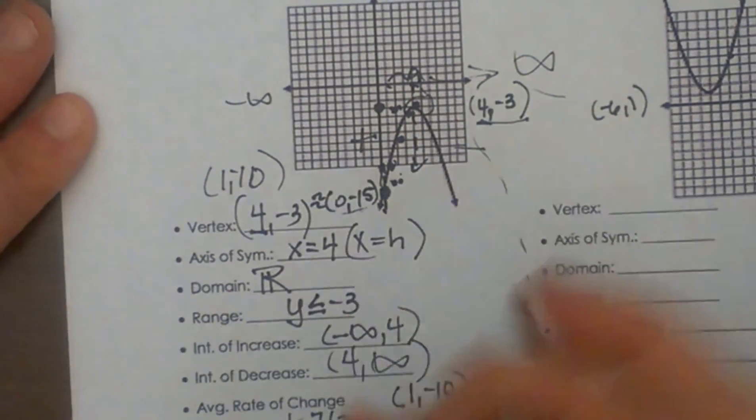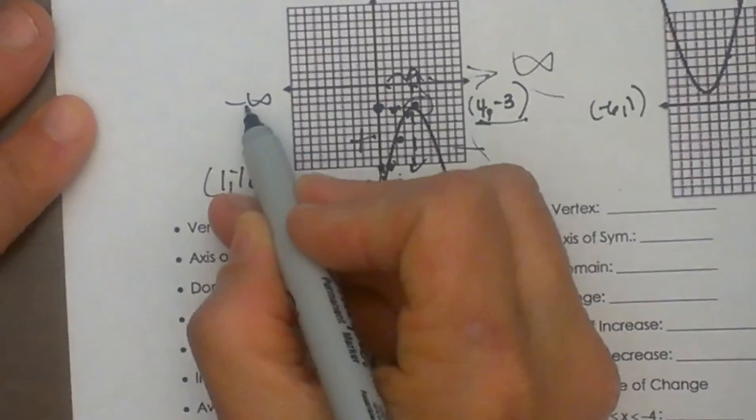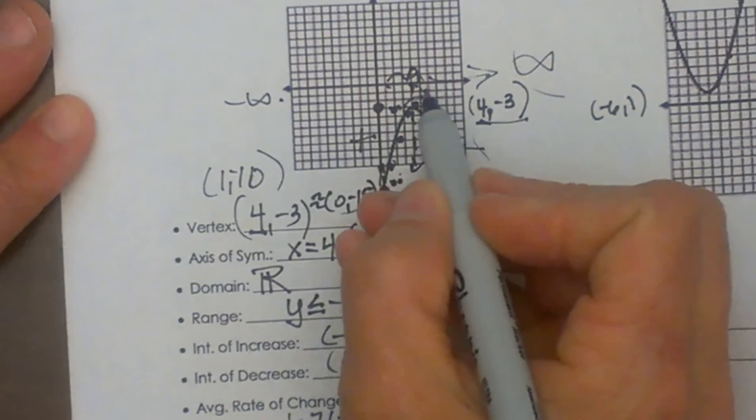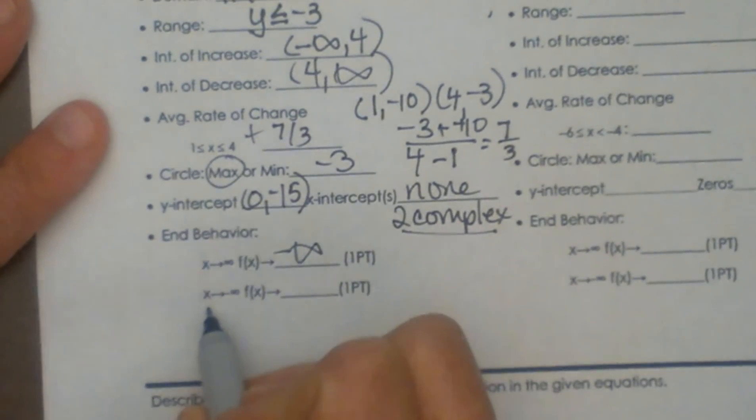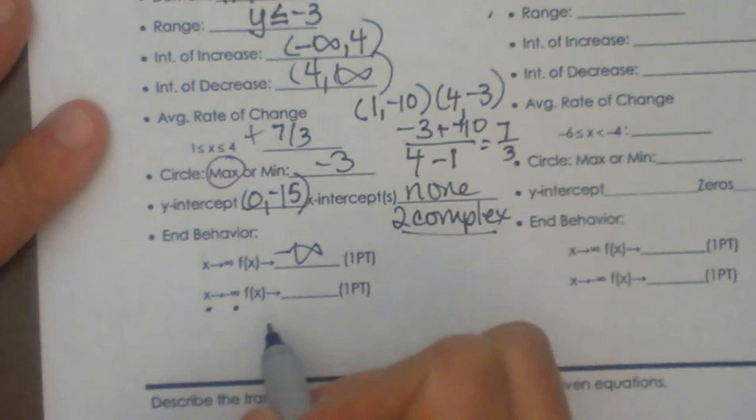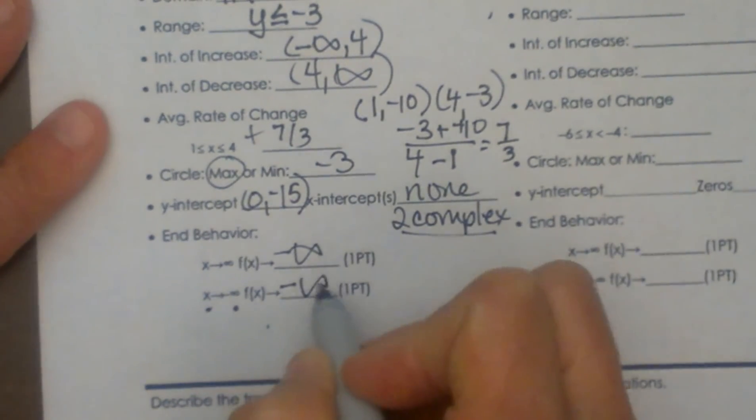Ok how about to the left. As x goes to negative infinity so as x gets smaller what is the graph doing? Well the graph is going down still. So that means as x goes to negative infinity the function also goes to negative infinity.